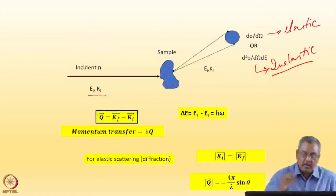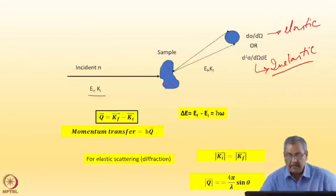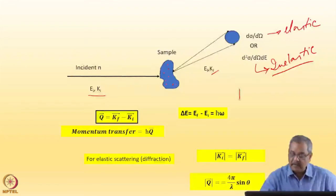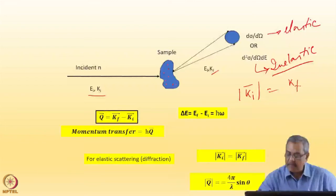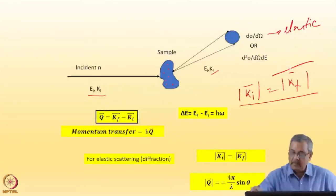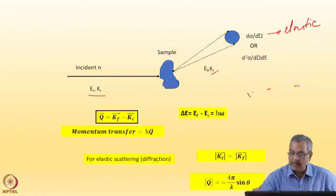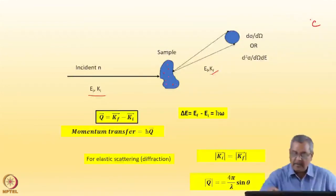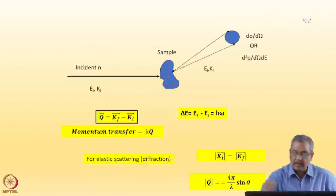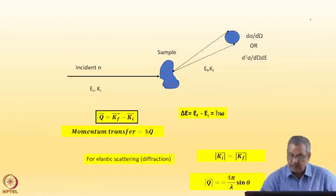We have an incident neutron of energy E_i and wave vector K_i. The sample perturbs this wave and sends it in a direction defined by the final wave vector K_f. If it is inelastic, then there is a different energy; otherwise it is with the same energy. In the case of elastic scattering, the magnitudes of K_i and K_f will be the same, but only their directions are different — this is the case of diffraction. When I bring in the formalism of Fermi's Golden Rule, I will use elastic scattering first, but it is equally true for inelastic scattering.